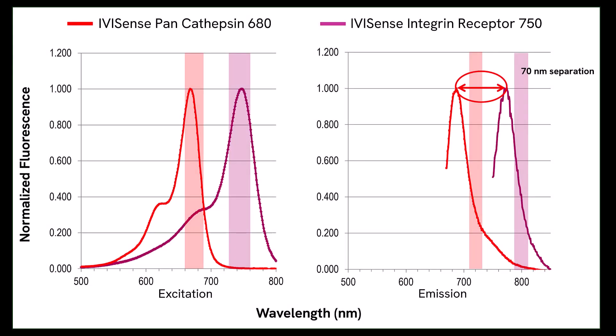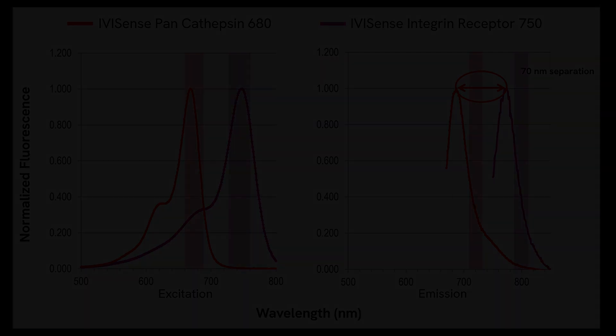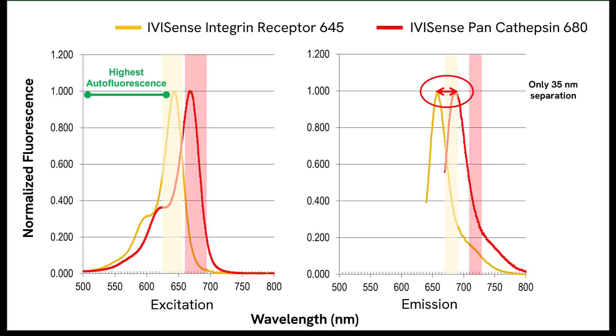Let's move on to the experimental design of our second in vivo fluorescence imaging study. In the previous study we imaged two probes with 70 nanometer separation in their emission spectra. Here we will image two probes that emit at much closer wavelengths to demonstrate spectral unmixing. We will replace our VivoSense integrin receptor probe from one that emits at 750 nanometers to one that emits at 645 nanometers.